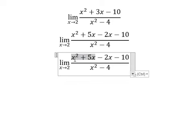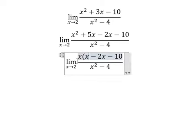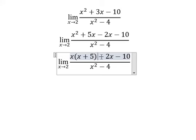First, we can rewrite the numerator by factorization: x² + 3x - 10 can be written as x² + 5x - 2x - 10.